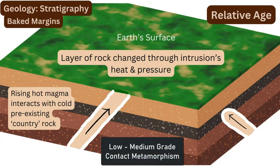This next principle builds on cross-cutting relationships and is called baked margins. This is where contact metamorphism occurs around an igneous or magma intrusion as it flows up through the pre-existing sedimentary surface layers. The heat and pressure create metamorphism at the edge of the magma in contact with the colder country rocks, forming different minerals and metamorphic rocks of low to medium grade. The intrusion must happen first, and then the degree of baked margins — in terms of crystal and grain size — indicates the timing of this change.